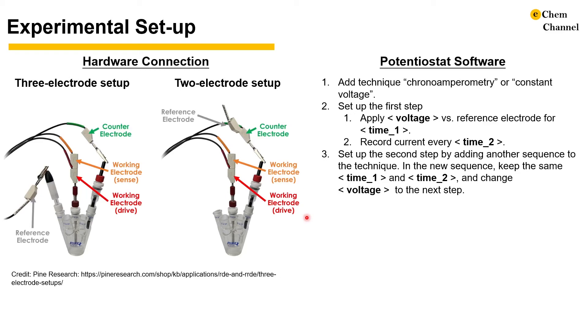Here I'm using the phrase sequence to indicate that the potential ramp should be a continuous process. In a new sequence, keep the time 1 and time 2 the same, change the voltage to the next value. Repeat this step until all potential steps are set up.